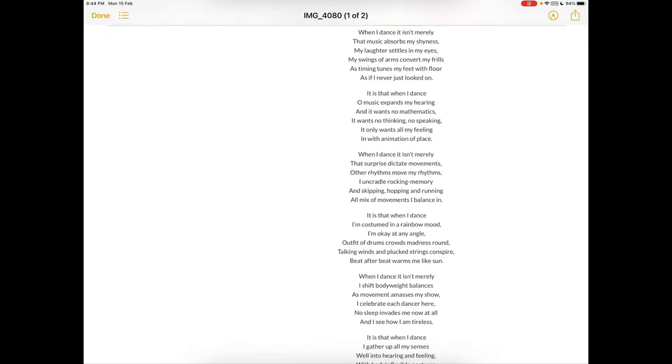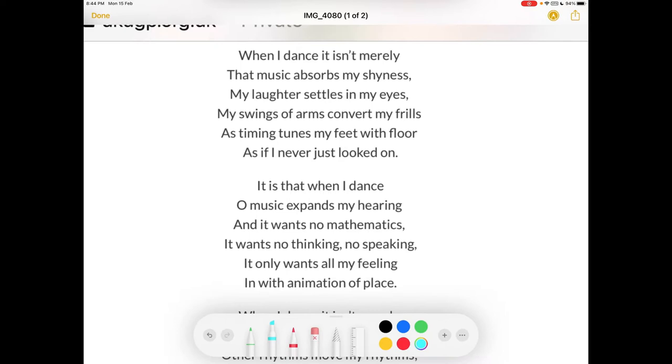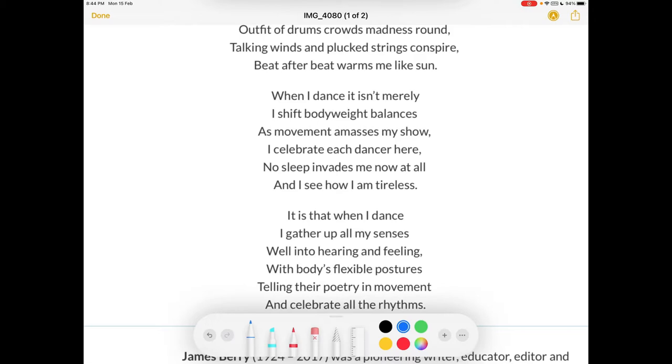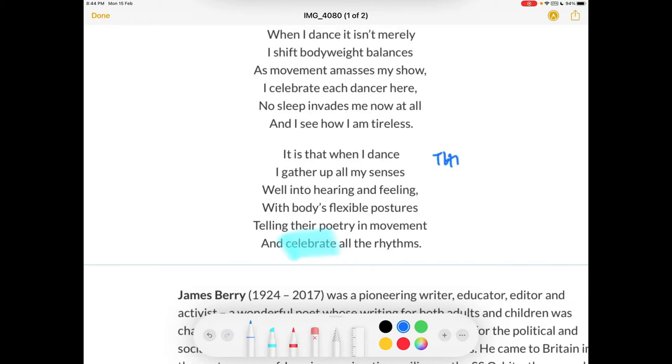Okay, so first up I'll just start annotating. The first thing that I noticed when I was reading the poem is the repetition. Let's write that down first: repetition of the phrase when I dance. So we can ask ourselves why. Perhaps it is a moment of celebration, as is suggested in the last line where it says celebrate all rhythms. So definitely one theme would be about celebration.